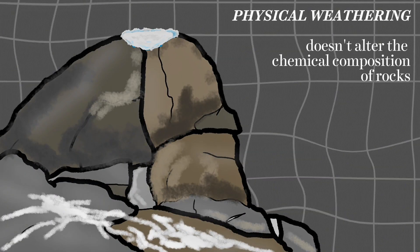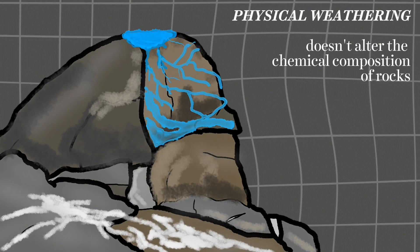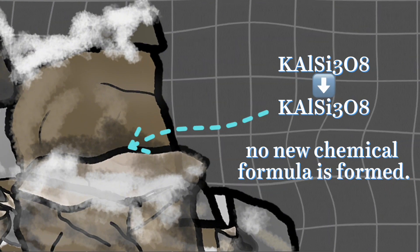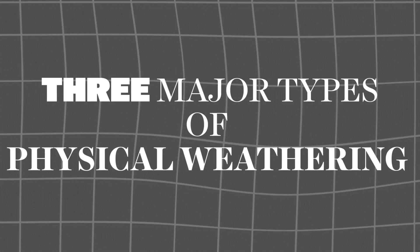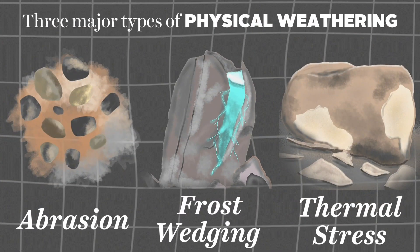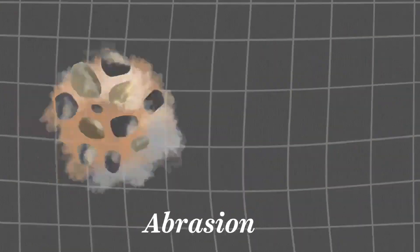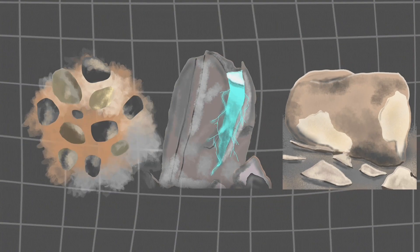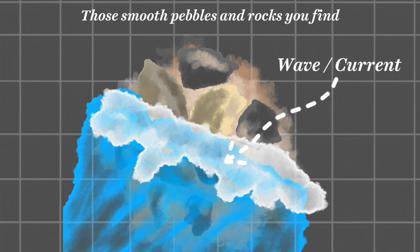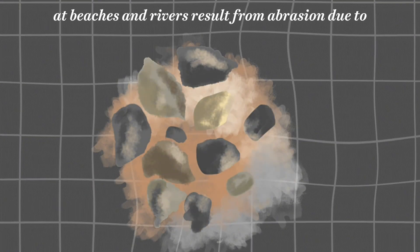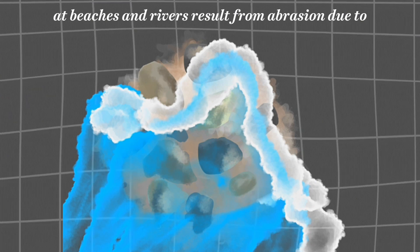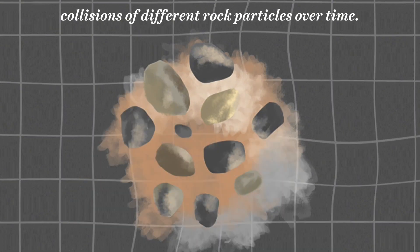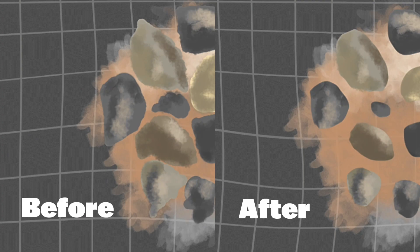Physical weathering involves the disintegration of rocks into smaller fragments without altering their chemical composition. Let's explore three major types of physical weathering: abrasion, frost wedging, and thermal stress. Those smooth pebbles and rocks you find at beaches and rivers result from abrasion due to collisions of different rock particles over time, creating a smooth surface.